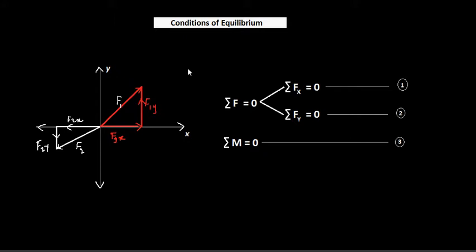Here we have a system of forces with two forces F1 and F2 acting on the xy plane. You have your x-axis and y-axis, and F1 is acting at a particular angle to the x-axis and F2 at another angle. By resolving the forces, there will be two components for F1 and F2 — one parallel to the x-axis and one parallel to the y-axis. The equation of force equilibrium splits into two: summation of forces along the x-axis should be zero, and summation of forces along the y-axis should be zero.